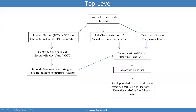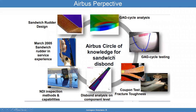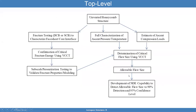Starting with the unvented honeycomb structure, we want to characterize the properties of the face sheet to core through fracture testing — characterize that disbond fracture toughness between the face sheet and the core. You want to determine what the critical energy release rate is, which is a material property. The idea is then to perform some validation testing to make sure you can actually predict failure properly in a small coupon: basically pressurize it and cycle it to see if you can get it right.